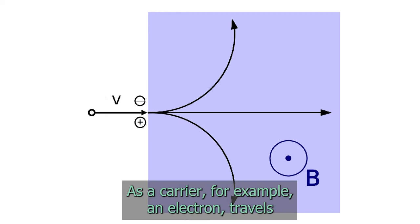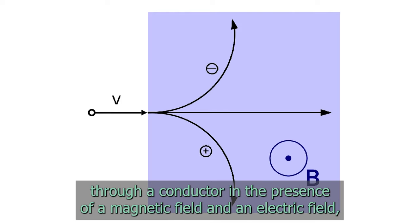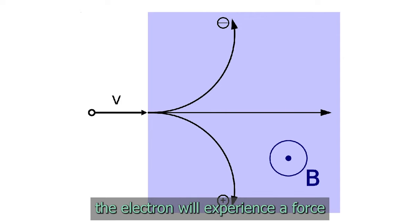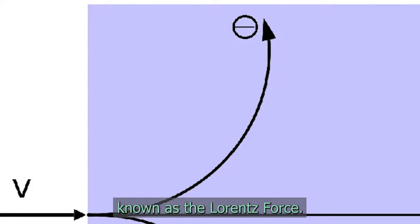which is transverse to the electric current and to an applied magnetic field that is perpendicular to the current. As a carrier, for example an electron, travels through a conductor in the presence of a magnetic field and an electric field, the electron will experience a force known as the Lorentz force.